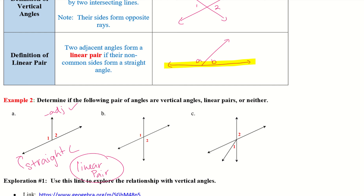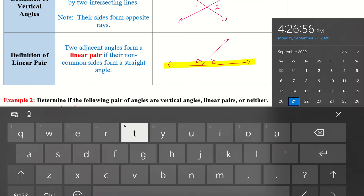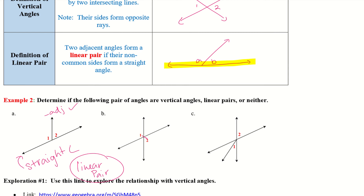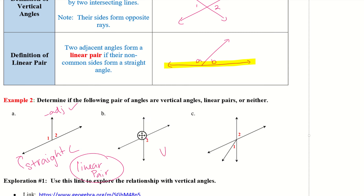For B, angles 1 and 2 are opposite from one another. They don't have any common rays, so it's a vertical angle.